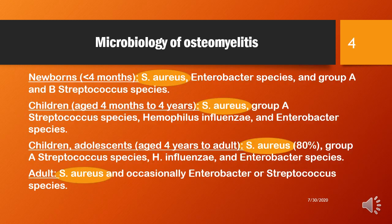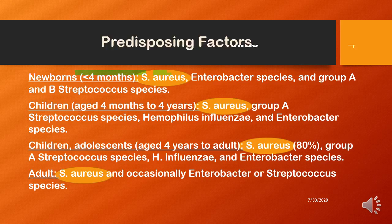Coming to the microbiology of osteomyelitis, of all age groups, Staphylococcus aureus is the most common organism involved with osteomyelitis, followed by Enterobacter species, Group A and Group B Streptococcus species, and Haemophilus influenzae.